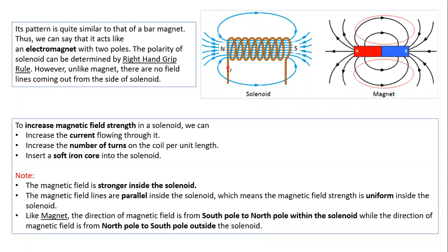The magnetic field inside the solenoid is stronger and uniform — meaning the magnitude of the magnetic field is the same at any point inside the solenoid. Remember that the magnetic field runs from the north pole to the south pole. The end of the solenoid where the current flows out becomes the north pole, and the remaining end becomes the south pole.